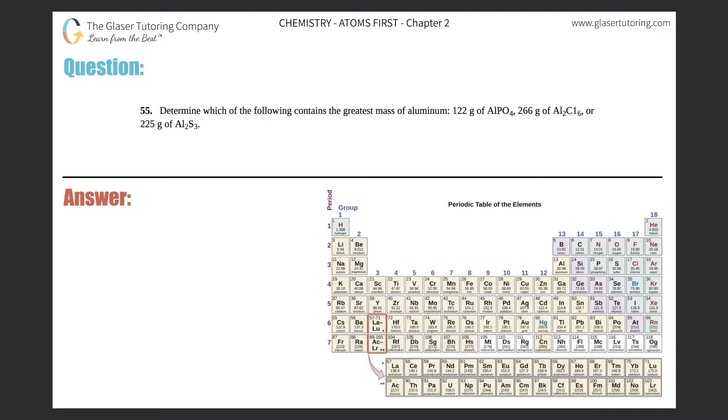Number 55: Determine which of the following contains the greatest mass of aluminum. They give me three samples: 122 grams of AlPO4, 266 grams of Al2Cl6, and 225 grams of Al2S3. Now the hidden problem in this question is that they gave us samples of compounds, but the question is asking which one has the greatest mass of aluminum, and aluminum is just Al - it's just an element or an atom.